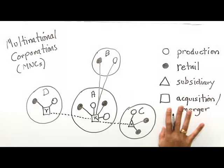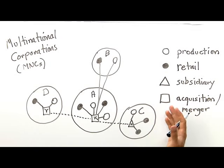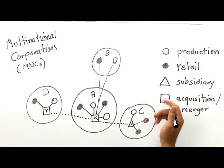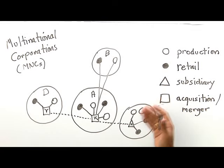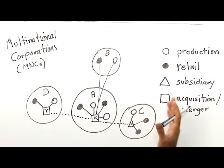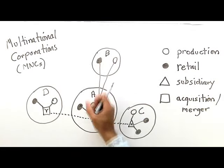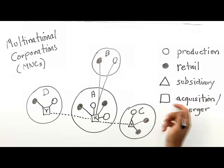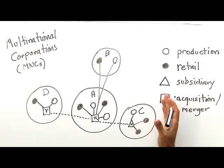But the critics of multinational corporations say that multinational corporations, on balance, have a negative impact. And they say this because they argue that multinational corporations serve to decapitalize other countries. And what they mean by that is they take profit—they take money and resources out of other countries and bring it to the home country, the headquarters country.